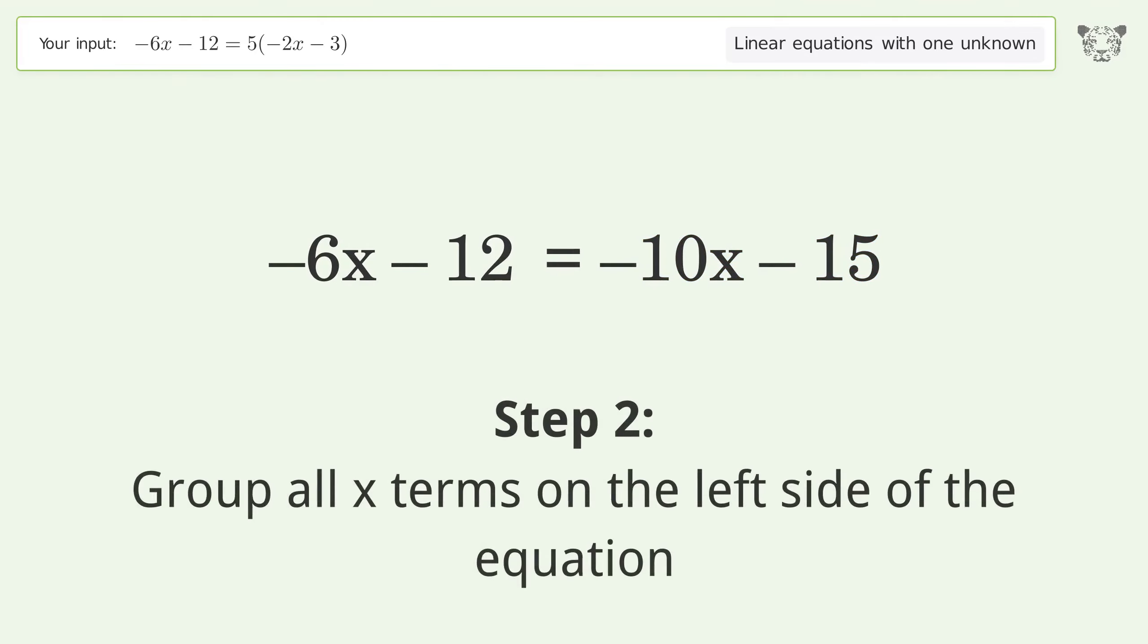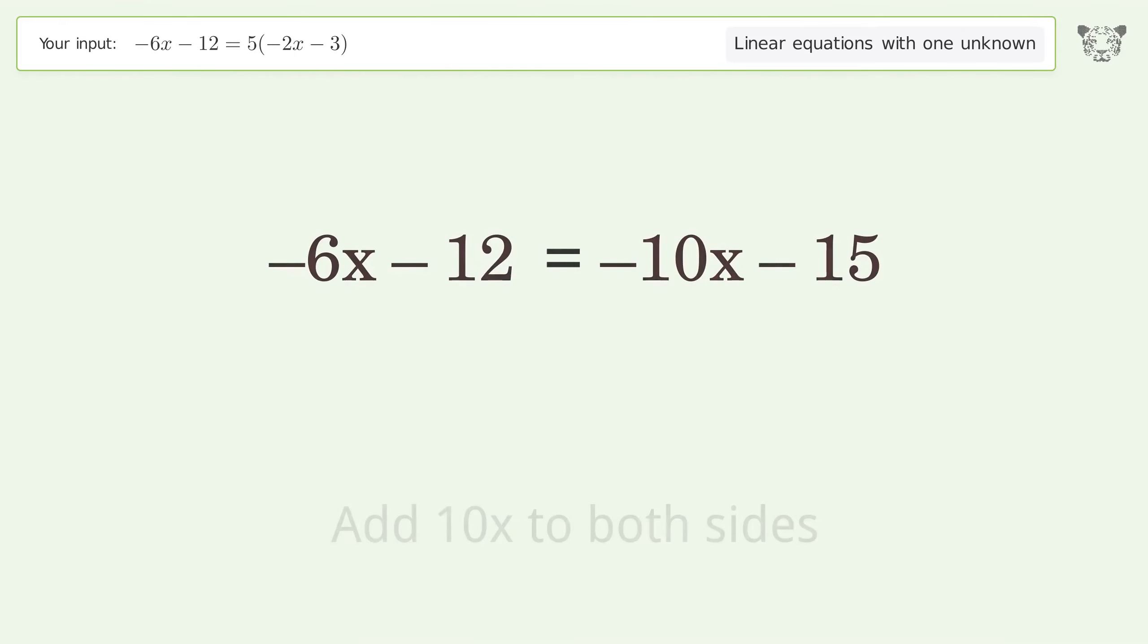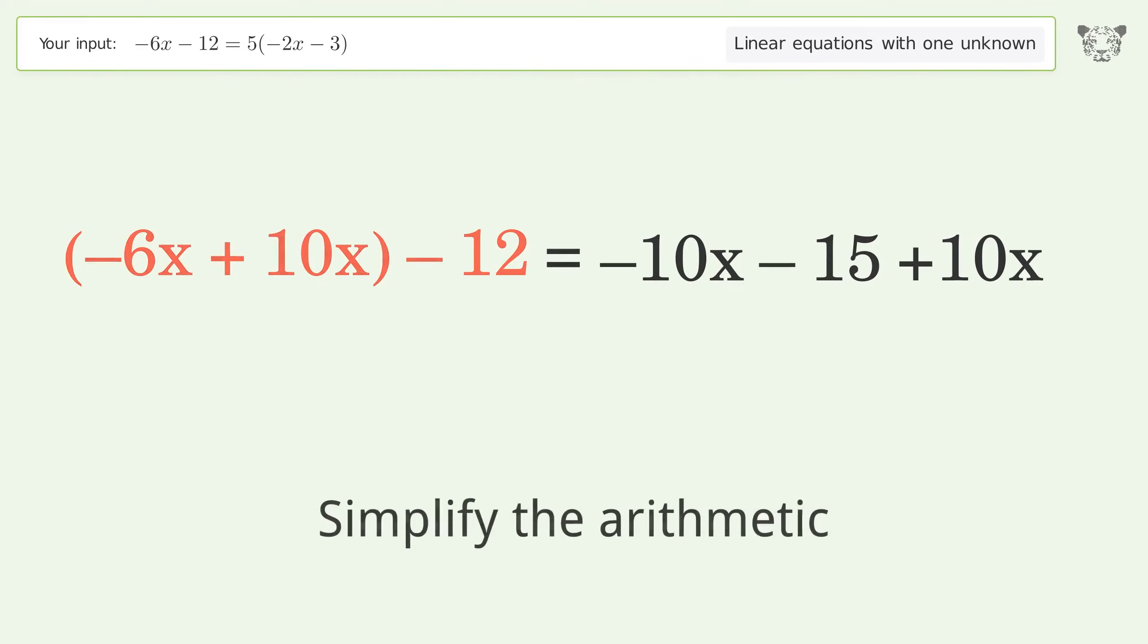Group all x terms on the left side of the equation. Add 10x to both sides. Group like terms. Simplify the arithmetic.